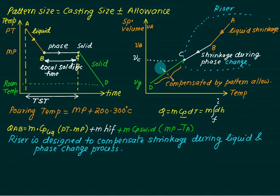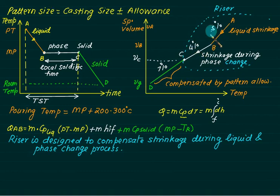Suppose liquid shrinkage is 7% and phase-change shrinkage is 4% — let's say 5%. So 5% plus 4% equals 9% — this is riser compensation. And 7% compensation is done by the pattern as shrinkage allowance.